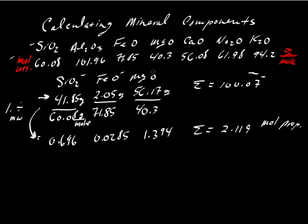And so now we have something that is proportional to the number of molecules, molecular SiO2, FeO, and MgO. Now 2.119, that's a rather inconvenient total, so we can, in step two, divide by the sum.